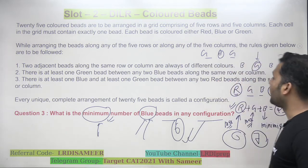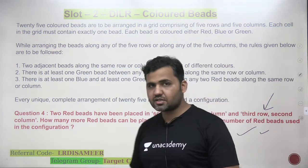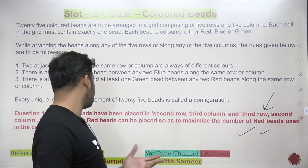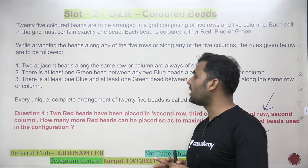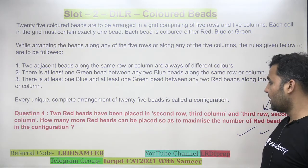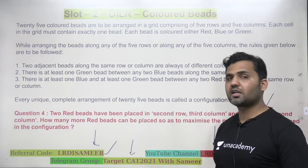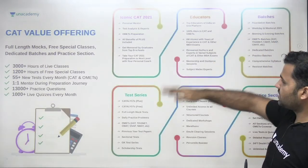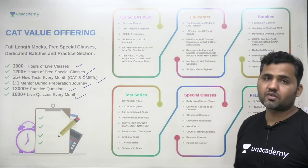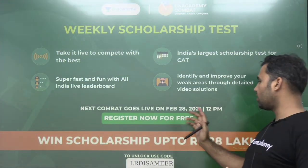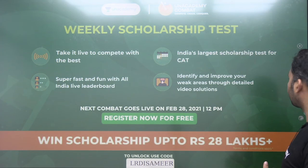There is one more question left — question number 4. I want all of you to try this question. Using this placement of beads in the 5×5 matrix, you are supposed to find out the maximum number of red beads that will be required. Try it — I hope you will get the idea and will be able to solve it. I will discuss the solution in the next part of the video. Thank you for watching. LRDSMIR is the referral code for PLUS subscription — 3,000 hours of live classes, 1,200 hours of pre-classes, one-on-one mentorship, and a scholarship test on the 28th of February. See you in the next part.